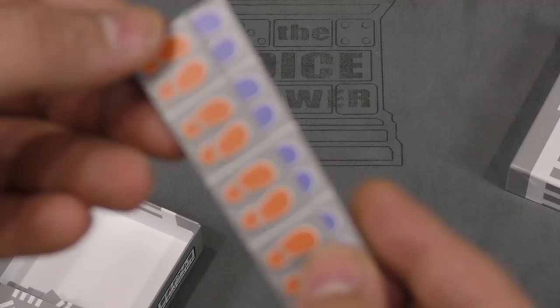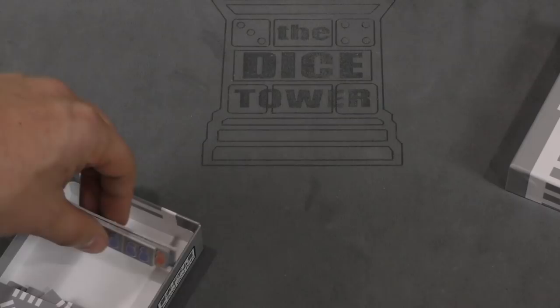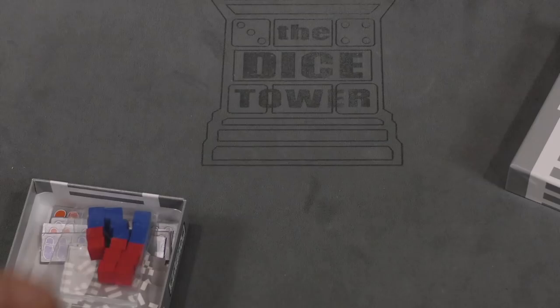Okay, that's pretty much all that's in here. There's a bunch of these tiles, those two things, some cubes, and the rules. That's Shibuya. That was a fast unboxing.